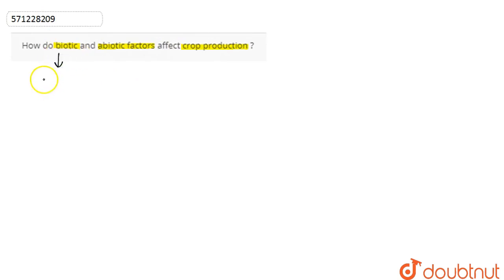Let's discuss some of the biotic factors, which include pests, nematodes, and disease-causing microorganisms. They all affect the net crop production in many ways.